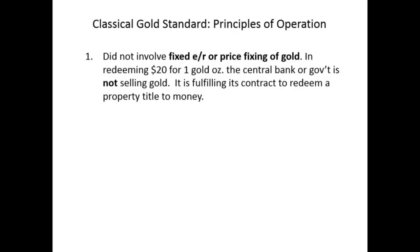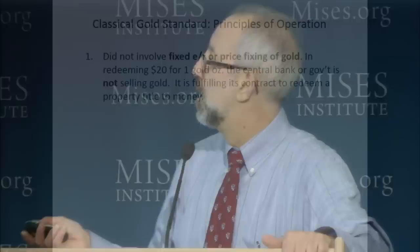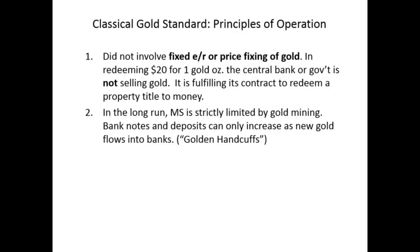In redeeming $20 for one ounce of gold, the central bank or the government is not selling gold for dollars — because monetarist economists led by Milton Friedman always claim that the gold standard is a price-fixing scheme, that the government sells gold for dollars at a fixed price of $20 per ounce. That's not the case. They're simply fulfilling their contract. They've received some of your property, and in exchange you receive a claim that they are contractually obligated to honor. You're not fixing the price of gold.